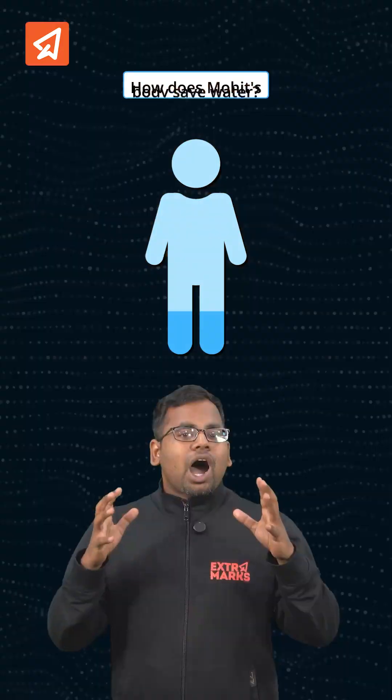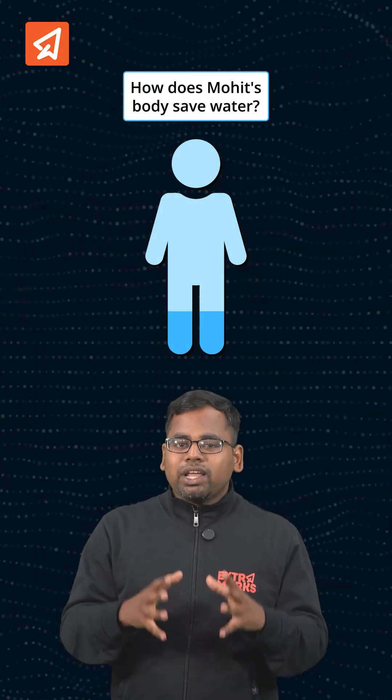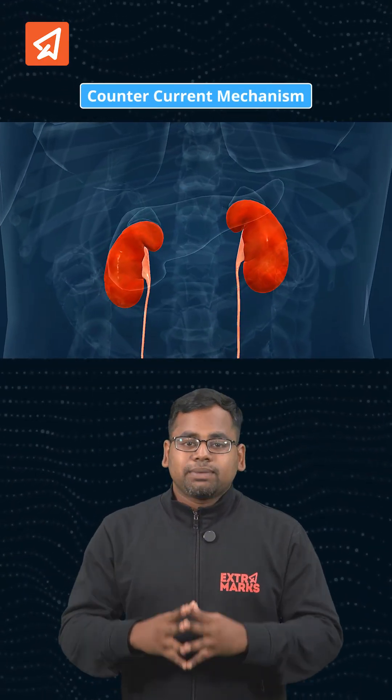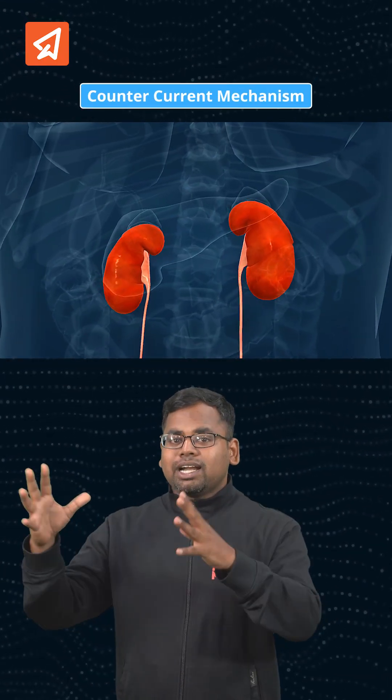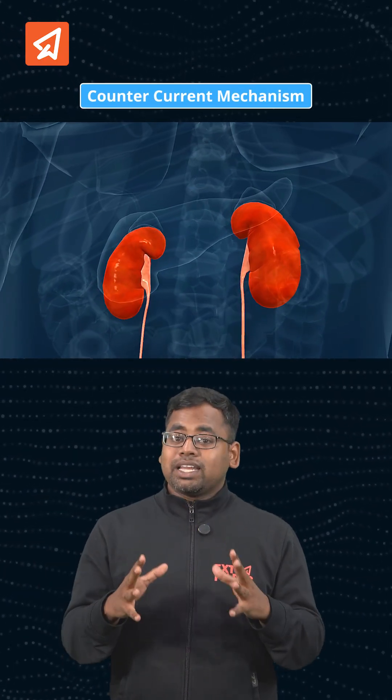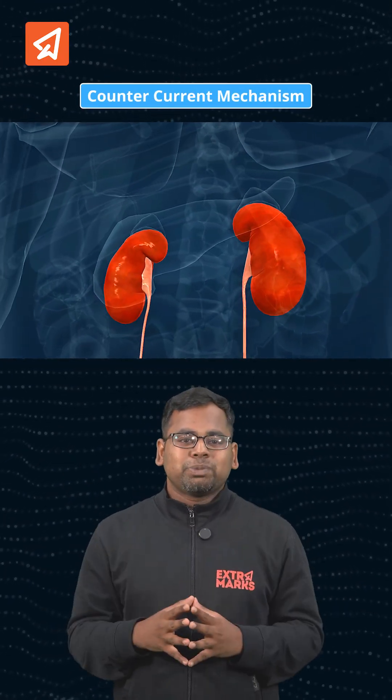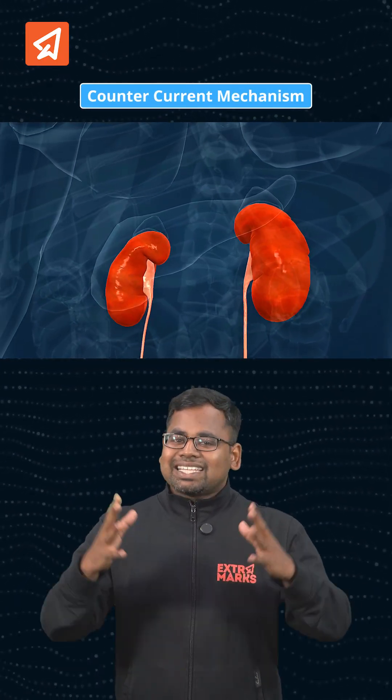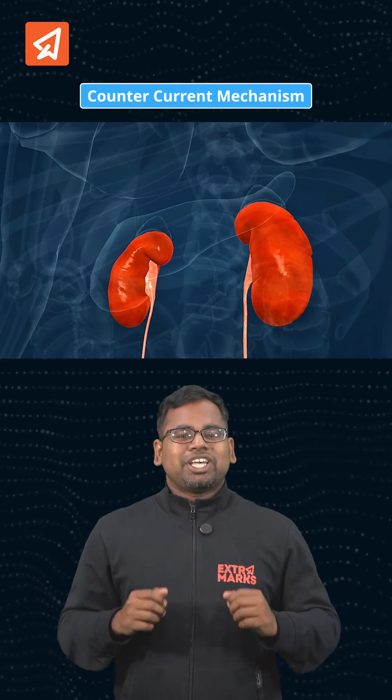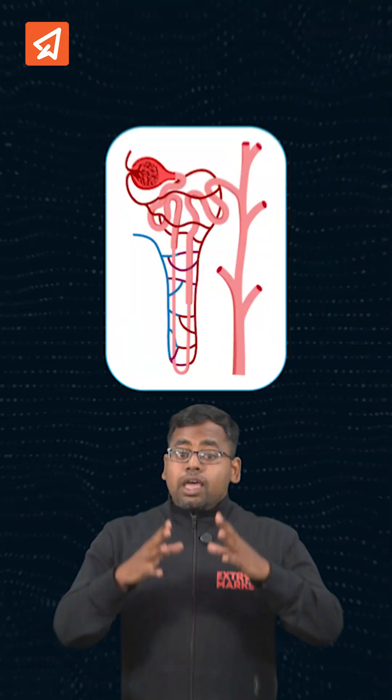Here is the twist. Mohit's body needs to save water to avoid dehydration. So how does his body handle this situation? That's where an amazing concept called the counter current mechanism of the kidney comes into the picture. Let's understand this in detail.